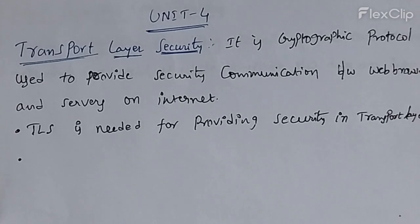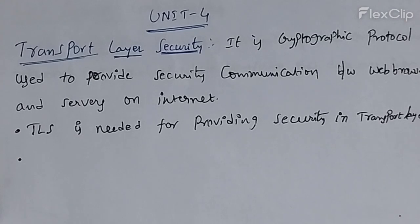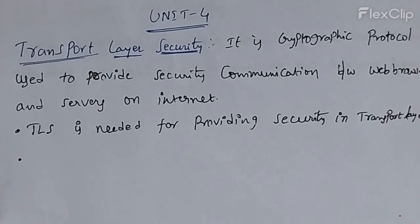What is the transport layer? In the OSI model, the transport layer is the fourth layer. The main role of the transport layer is to provide communication services directly to the application layer. The transport layer provides a logical communication between application processes running on different hosts.